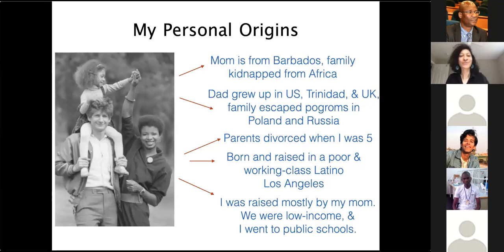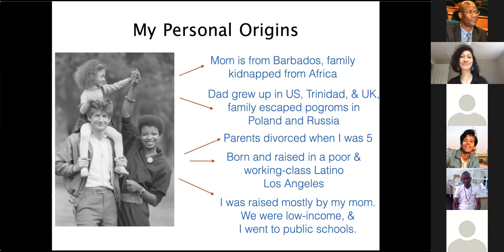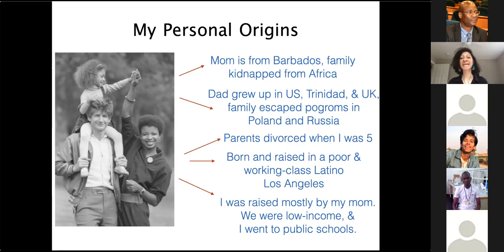My name is Chanda Prescod-Weinstein. This is a photo of me with my parents when I was four years old. My parents divorced when I was five, so this was basically the last time a photograph was taken of me with both parents until I graduated from university. My mom is Black and my dad is white. My mom is from Barbados — her family was kidnapped from Africa sometime in the 18th century. She came to the United States when she was 12; her grandmother had been in the US since the 1920s.